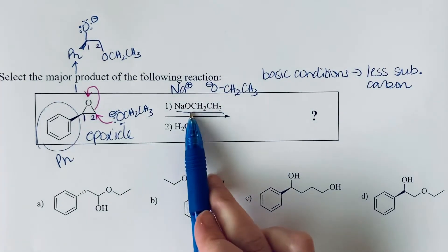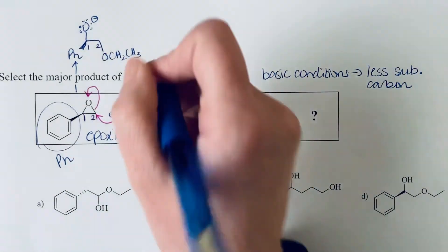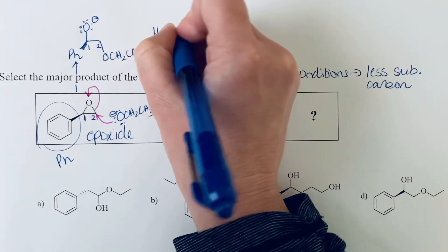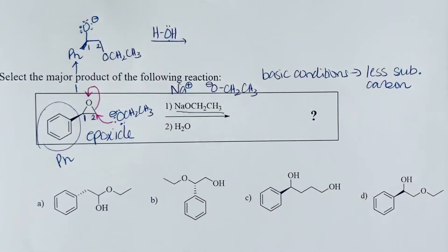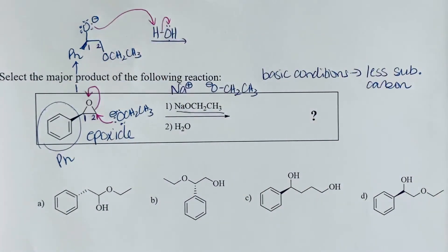After that, you'll have this as an anion until you add in some sort of proton source. That's what we're doing in the second step: we're adding in water just to protonate this oxygen. We will add a hydrogen there, meaning we're going to make this into an alcohol.